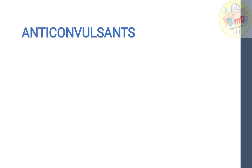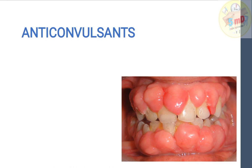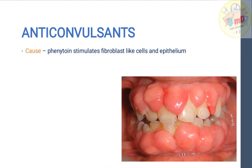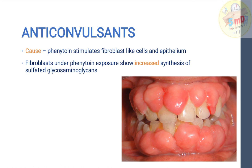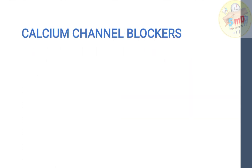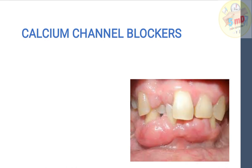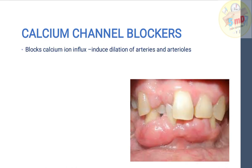Anticonvulsants such as phenytoin are classic drugs known to cause drug-induced gingival enlargement. Phenytoin stimulates fibroblast-like cells and epithelium. Fibroblasts under phenytoin exposure show increased synthesis of sulfated glycosaminoglycans — this is one of the main reasons for gingival enlargement here. A decrease in collagen degradation is also seen: collagen forms but refuses to degrade.